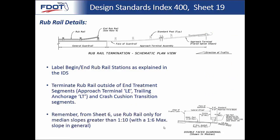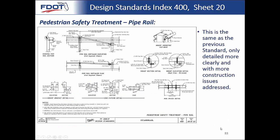Rub rail is only used for median slopes greater than 1 to 10 — so only on the median side. If the slope is greater than 1 to 10, the maximum allowable is 1 to 6. If you're between 1 to 10 and 1 to 6, you use rub rail to help increase the vehicle capture rate from that direction.